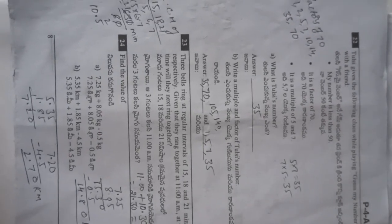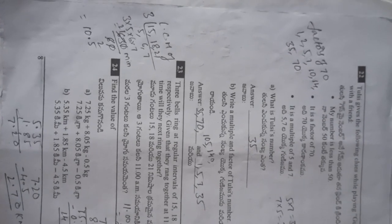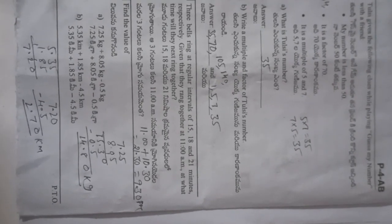Three bells ring at regular intervals. They ring together at 11 AM. To find when they will next ring together, we find the LCM. The LCM gives 630 minutes, which equals 10 hours 30 minutes. So 11 AM plus 10 hours 30 minutes equals 9:30 PM.